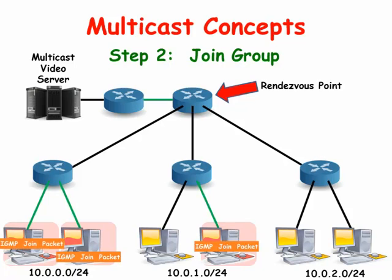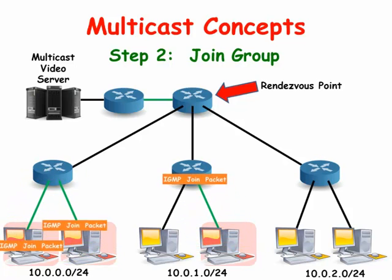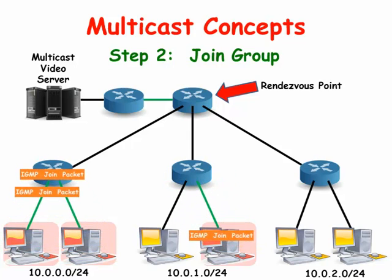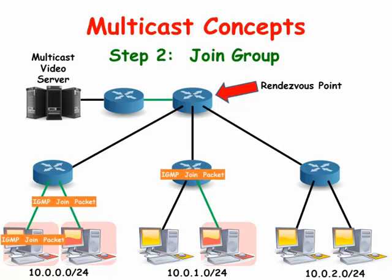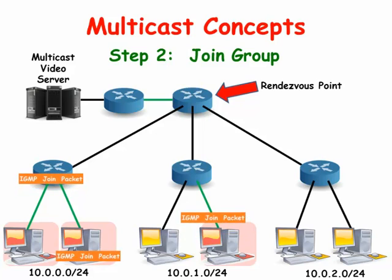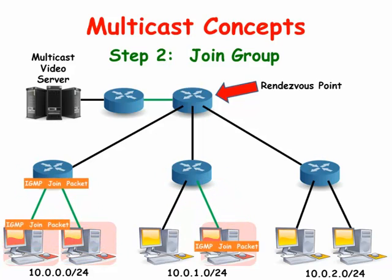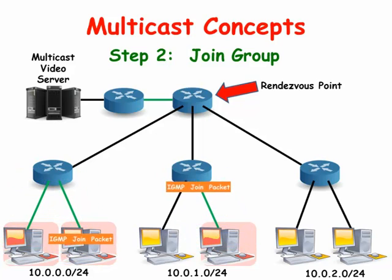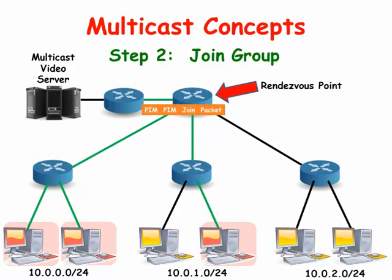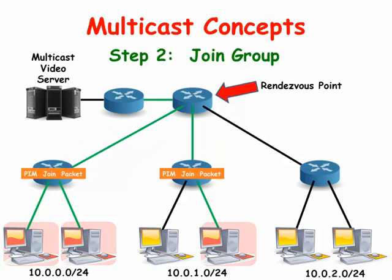The server only needs to send out one multicast packet. Each router forwards the packet out of every interface that leads to clients who want it. The path from the rendezvous point to the client computer forms a shared tree. Eventually, the router that is connected to the client computer will use whatever is the shortest path between the multicast server and itself, and prune any unnecessary connection.